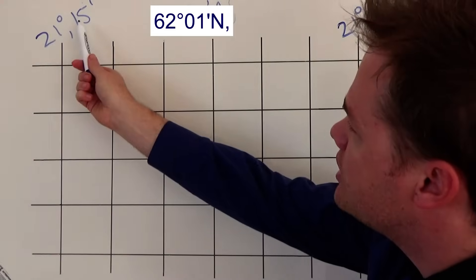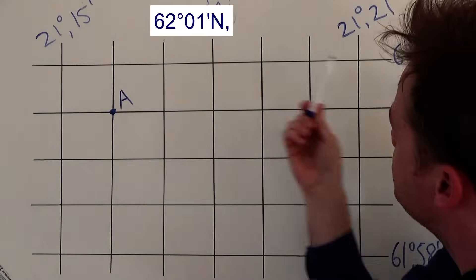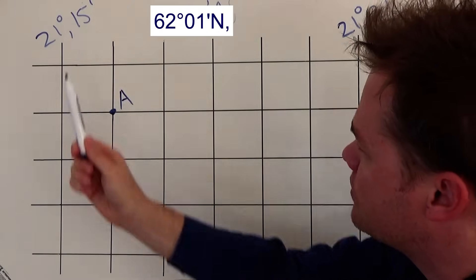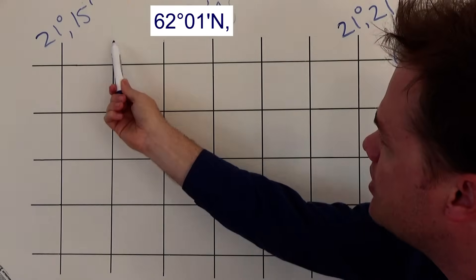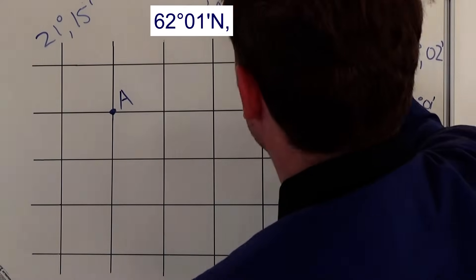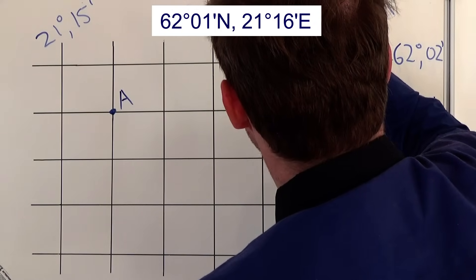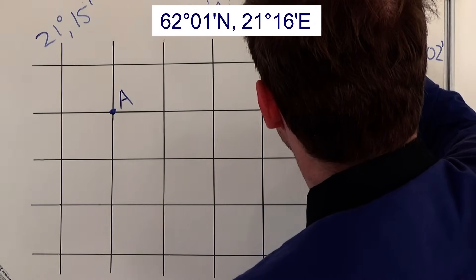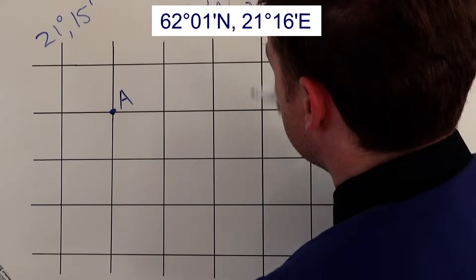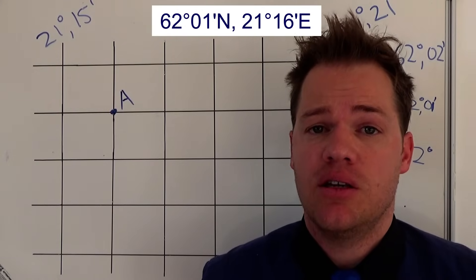Now to determine the longitude, we look at these lines. We have 21 degrees 15 minutes, and we've already said the numbers increase as we move in that direction. So 21 degrees 15 minutes, then this line will be 21 degrees 16 minutes. So we write 21 degrees 16 minutes east.